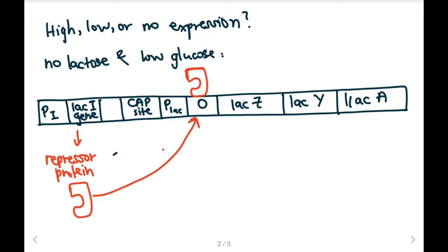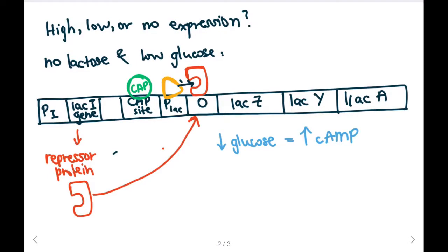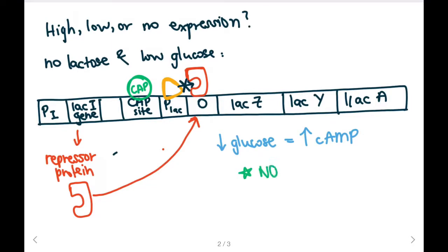Our repressor protein has bound to our operator, and since we have low levels of glucose, it's going to correlate to high levels of cAMP. This means that cAMP will bind to our CAP molecule, and our CAP molecule will bind to the CAP site. RNA polymerase will bind to the promoter of the LAC operon, but because the promoter is blocked by the repressor protein on the operator, RNA polymerase will not be able to move forward, and transcription will not occur. So we're going to have no expression.